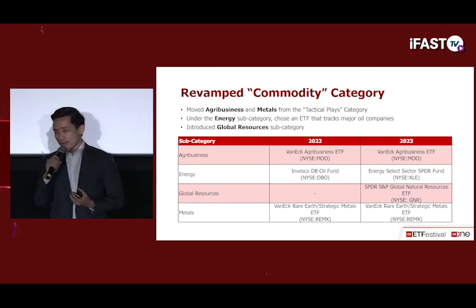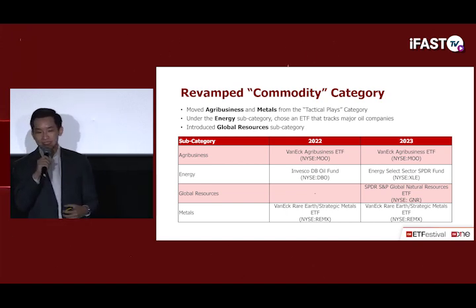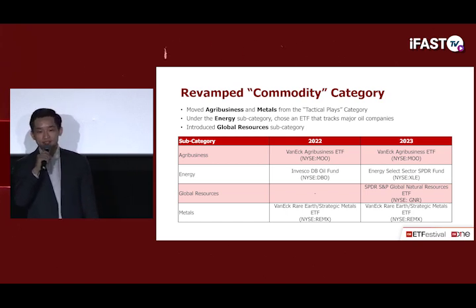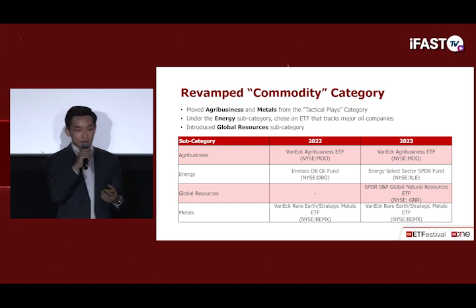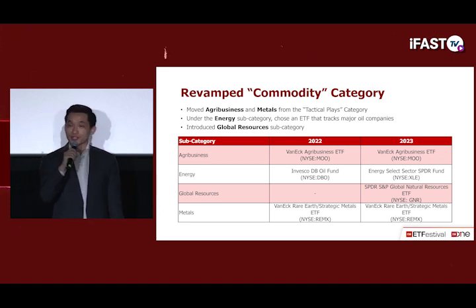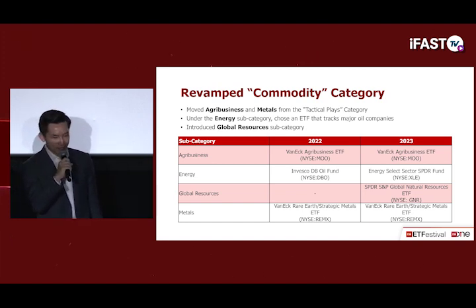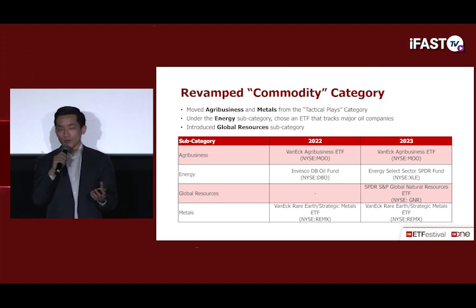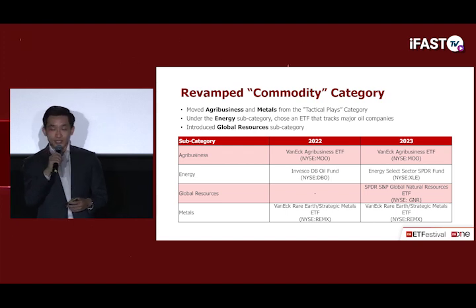We have also revamped the commodity category to make it more comprehensive and representative. We have moved agribusiness and metals from the thematic place category, though the recommended ETFs for these subcategories remain the same. For the energy subcategory, instead of an ETF tracking oil futures, we have chosen the Energy Select Sector SPDR Fund, which tracks major oil companies. Additionally, we added a Global Resources category where we recommend the SPDR S&P Global Natural Resources ETF.